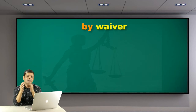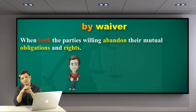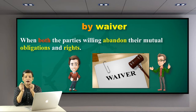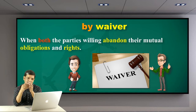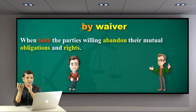The next mode is waiver. When both parties willingly abandon their mutual obligations and rights, that is waiver. Being parties to the contract, you have the right to abandon it, but the other party must also give free consent. With mutual consent, you can abandon or discharge the contract by relinquishing obligations and rights.